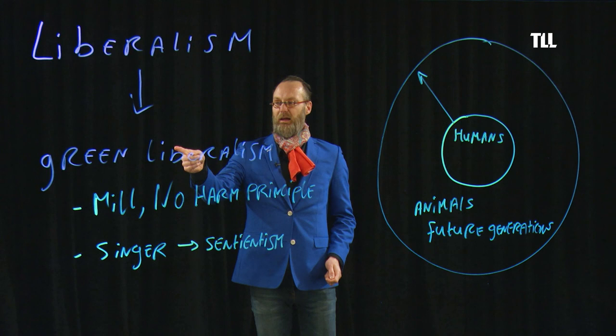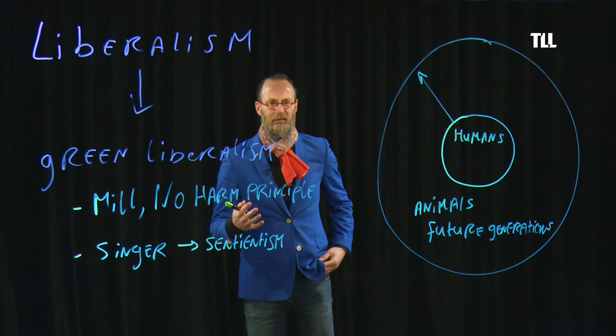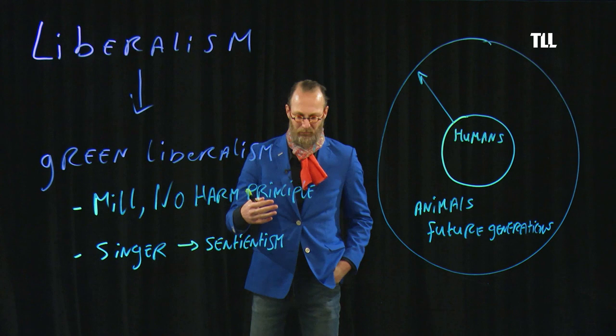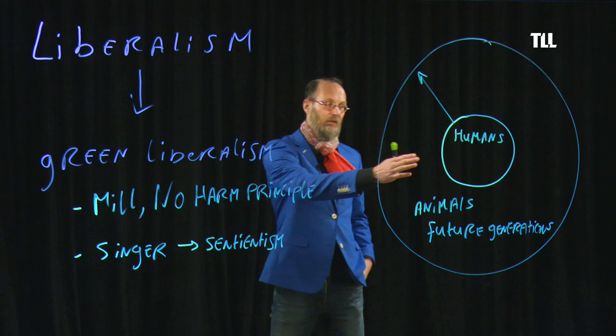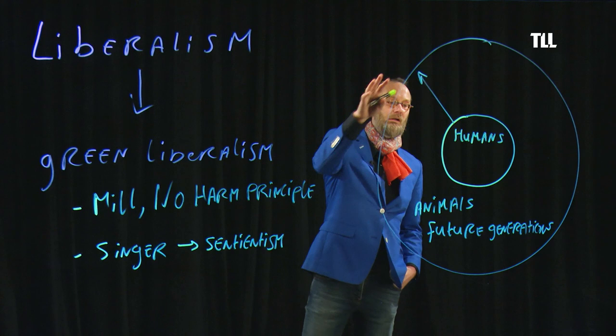So green liberalism is sentientistic liberalism. It's not a very smooth word, which is why I use green liberalism. Green liberalism is an anthropocentric liberalism expanded to include all non-human beings and future generations.